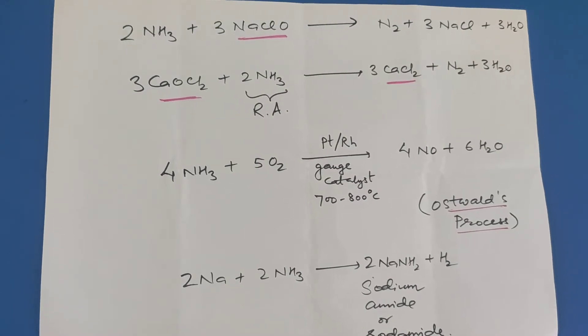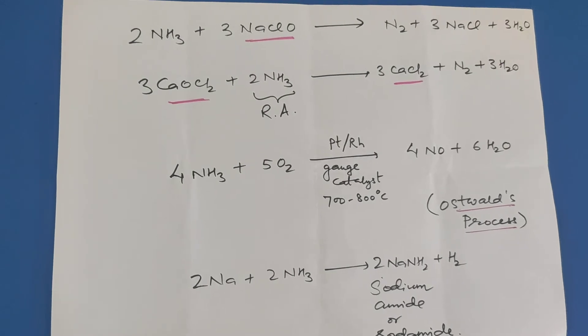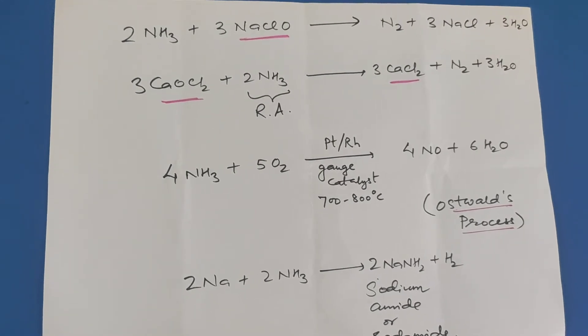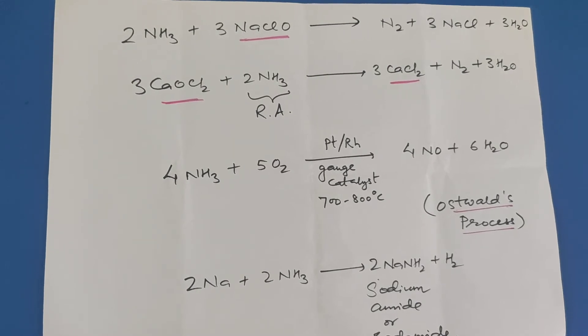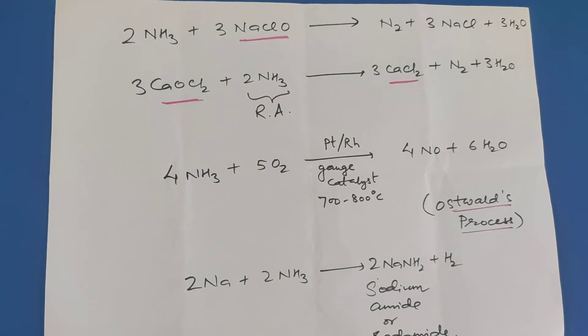Ammonia reacts with oxygen in presence of platinum rhodium gauze catalyst at 700 to 800 degrees Celsius to form nitric oxide plus water. This is an important step in the Ostwald process for the manufacture of nitric acid.